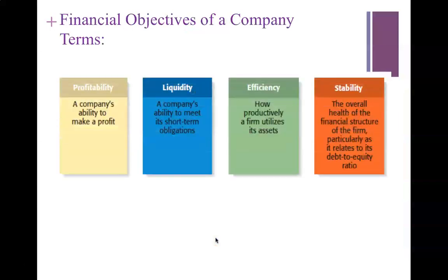Some terms to look at — and in your assessment you'll have to write a short paragraph on each of these. The first term is profitability: a company's ability to make a profit. Liquidity refers to a company's ability to meet its short-term obligations. Efficiency is how productively a firm utilizes its assets. And stability is the overall health of the financial structure of the company, particularly as it relates to the debt-to-equity ratio.